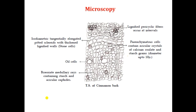Microscopy is very important from an adulterant point of view — you have to identify whether the bark is cassia bark or cinnamon bark. Being the inner bark of Cinnamomum zeylanicum, cork and cortex are absent, while in case of cassia bark, the cork is present. The pericycle shows lignified pericycle fibers occurring at intervals. A characteristic feature is the presence of isodiametric to tangentially elongated sclerenchymatous cells, called stone cells, having thickened lignified walls.